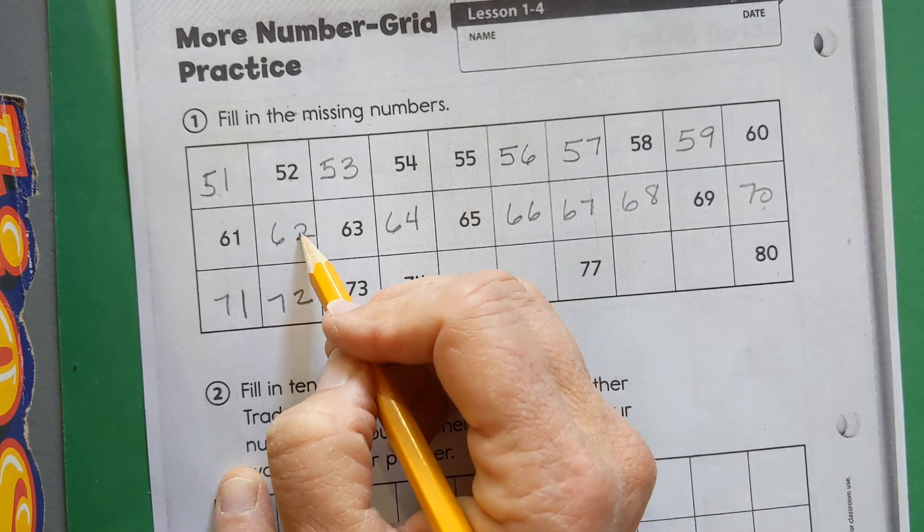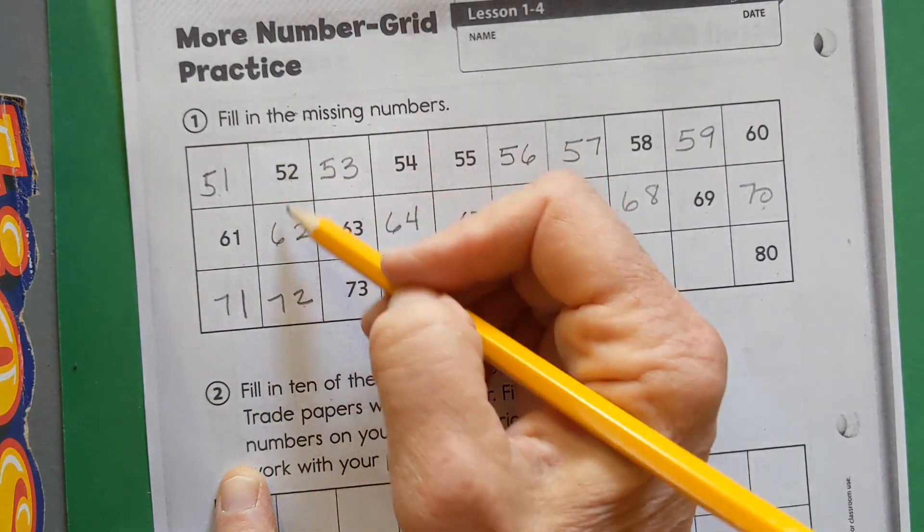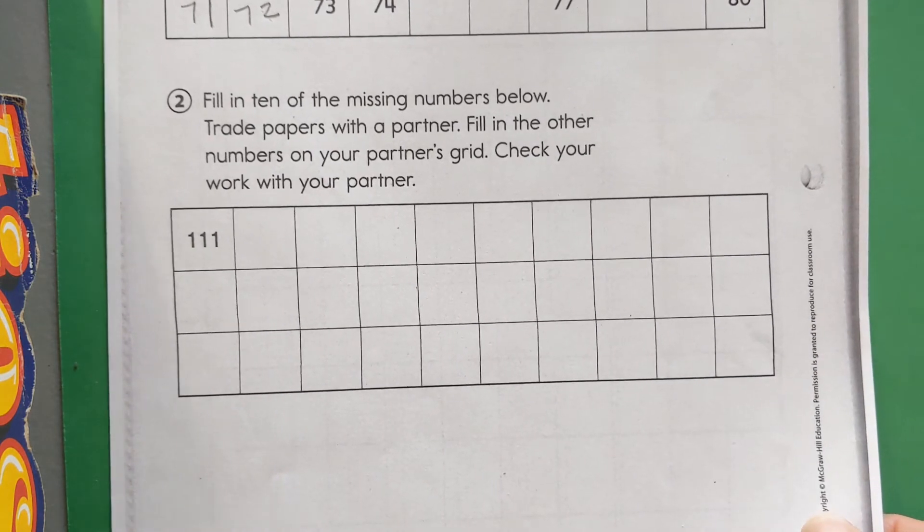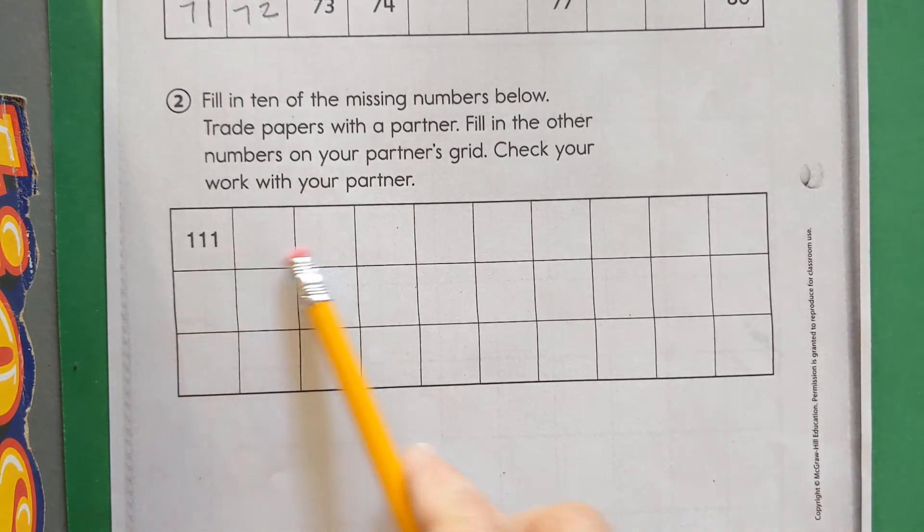So let's go ahead and try this. You go ahead and try a few and pause and then we'll turn it back on to check. Here we go, we're going to count out loud. This is 111, 112, 113, 114, 115.